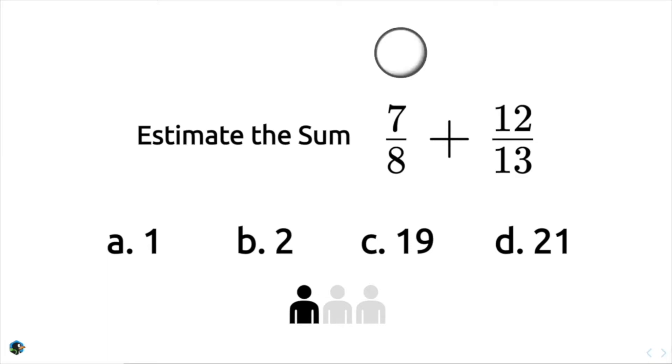That seven over eight means you take a unit, break it into eight parts, and keep seven of them. Similarly, 12 over 13 means break a unit into 13 parts, and keep 12 of those. Each of which produces objects that are about one. And one plus one is two.